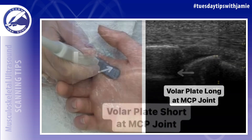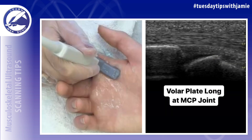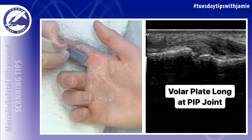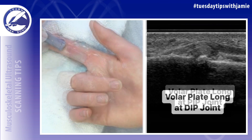They connect two bones in each finger joint and are continuous with the articular surface. The volar plate inserts onto the joint capsule and functions to limit joint hyperextension.